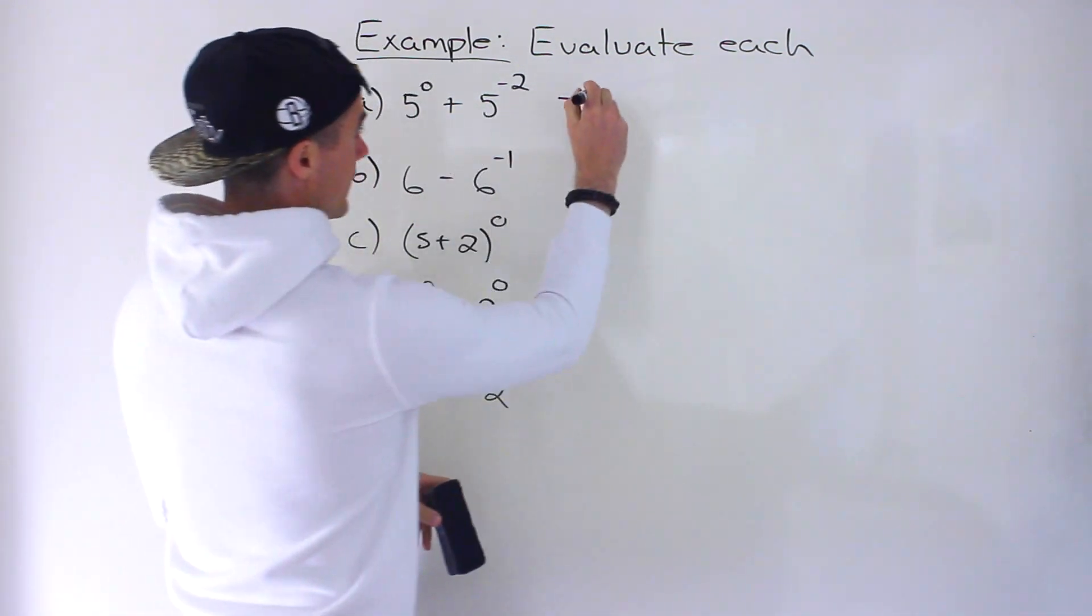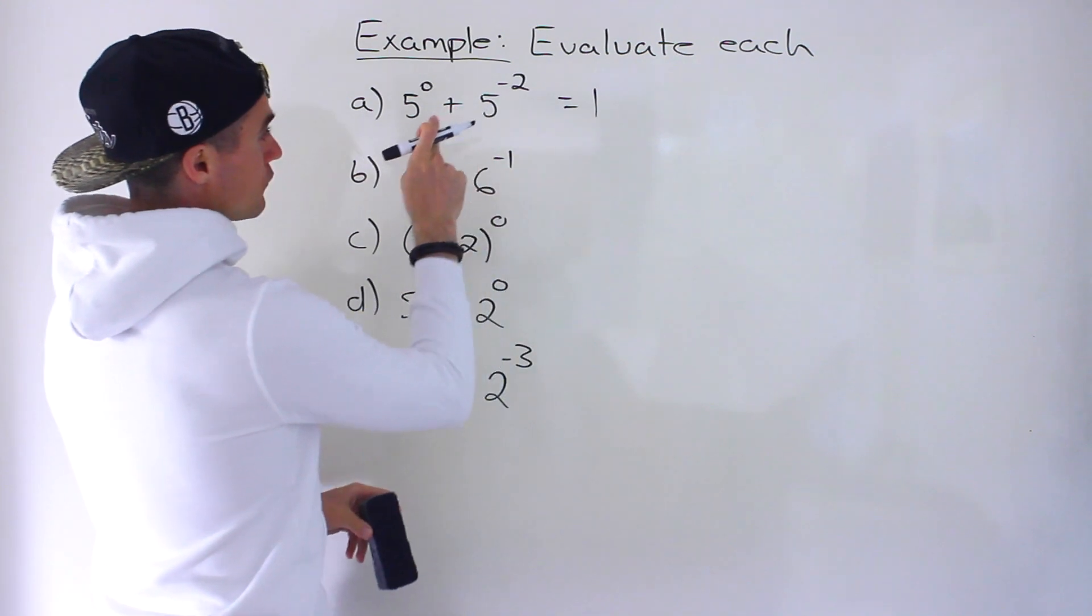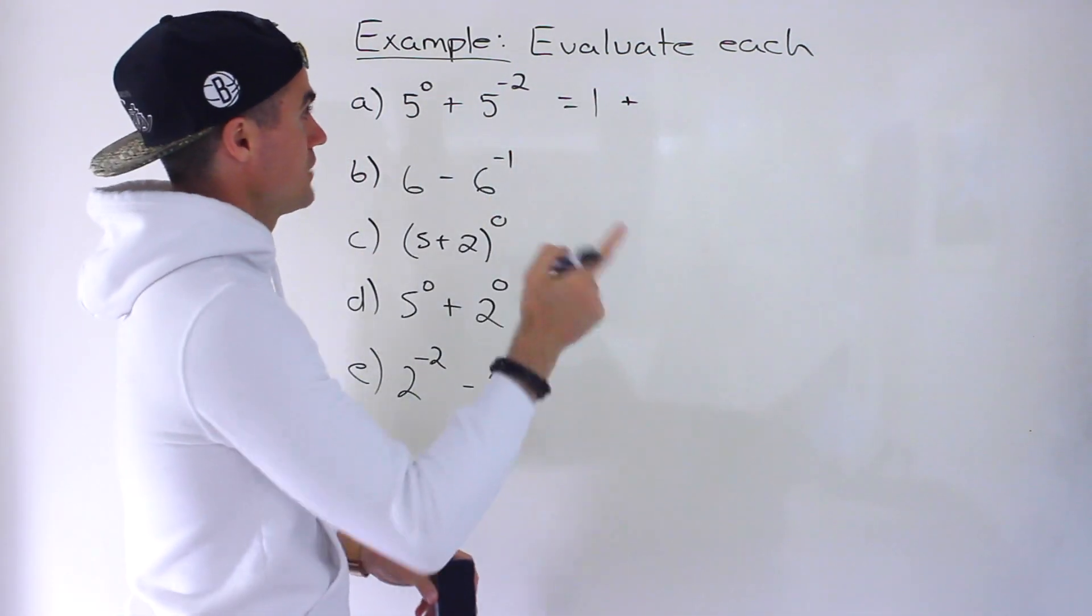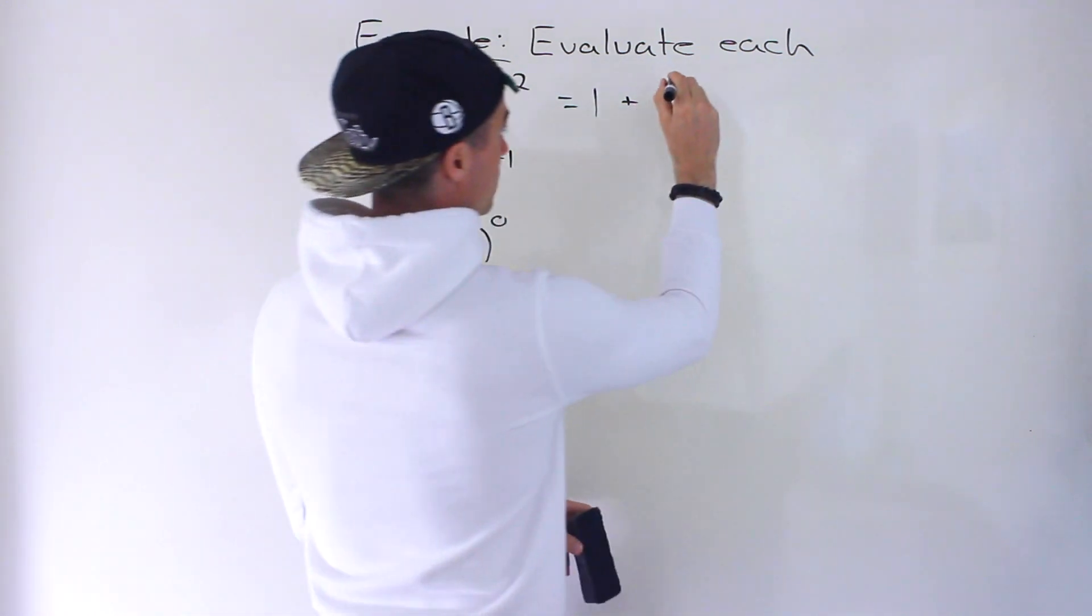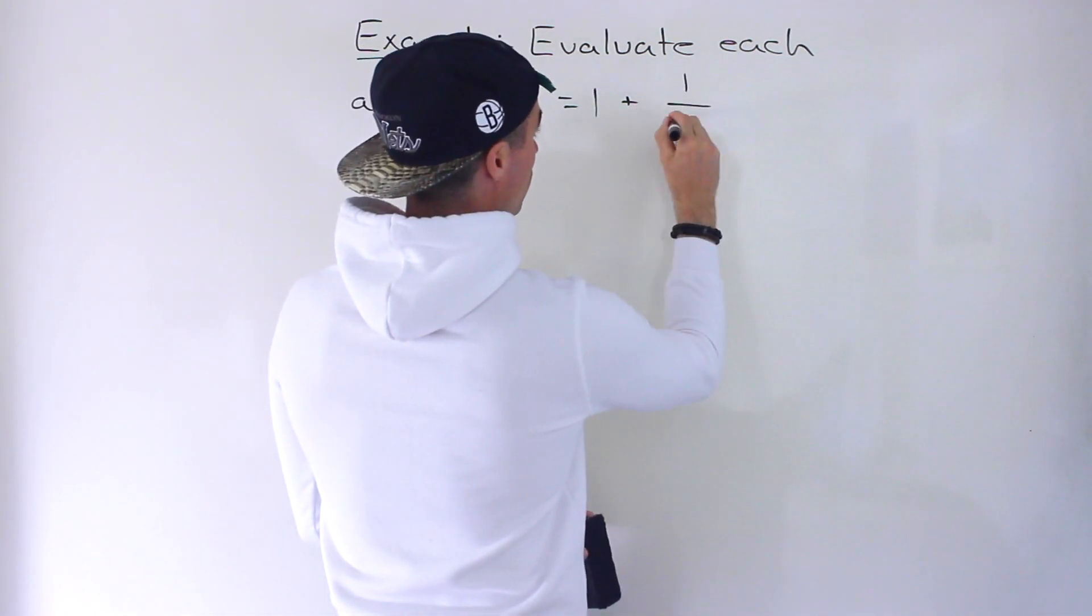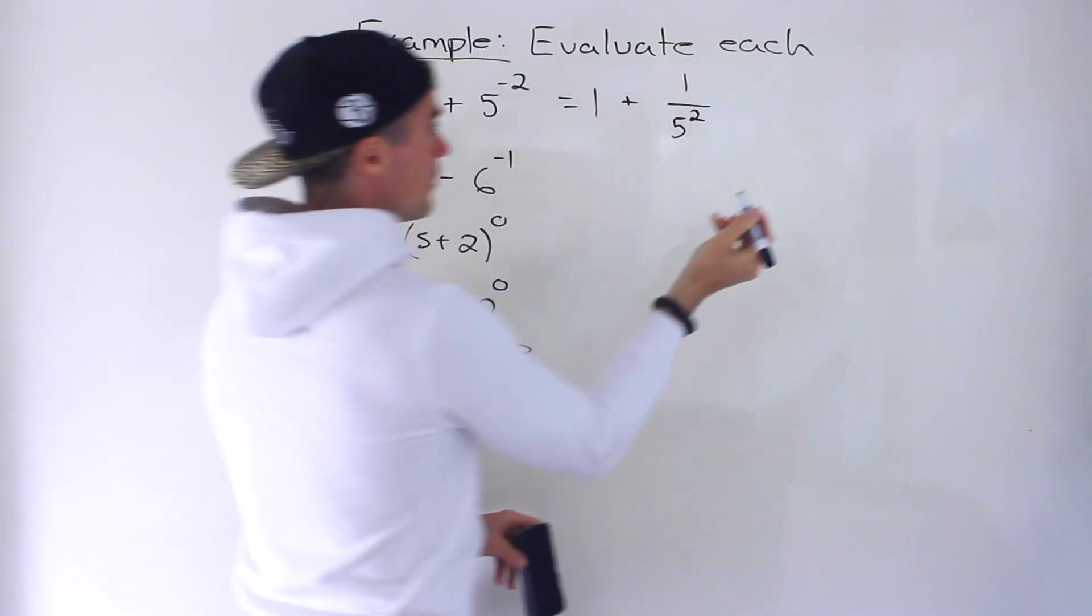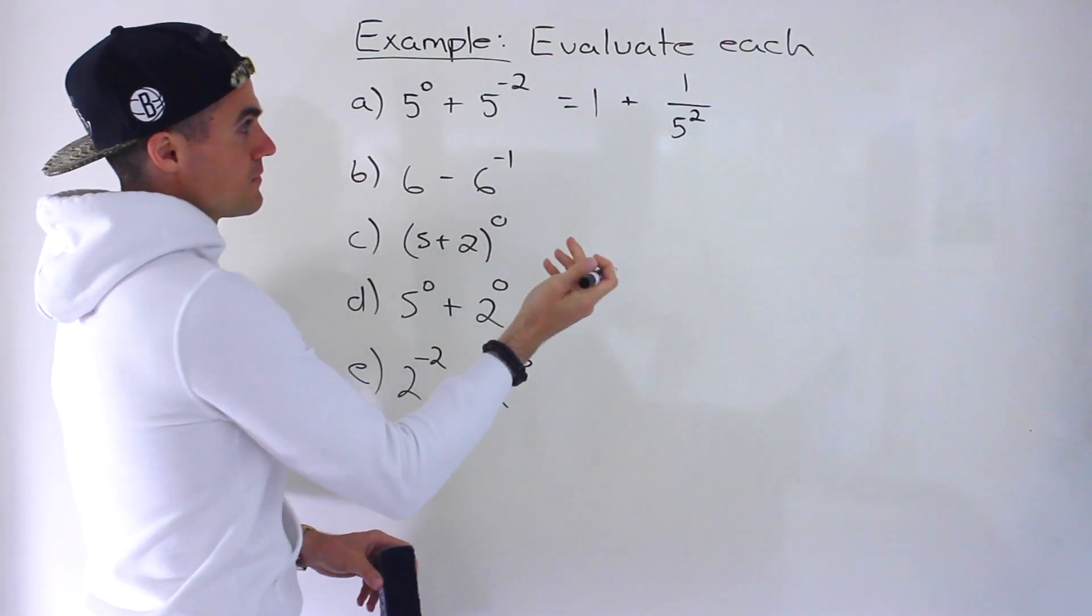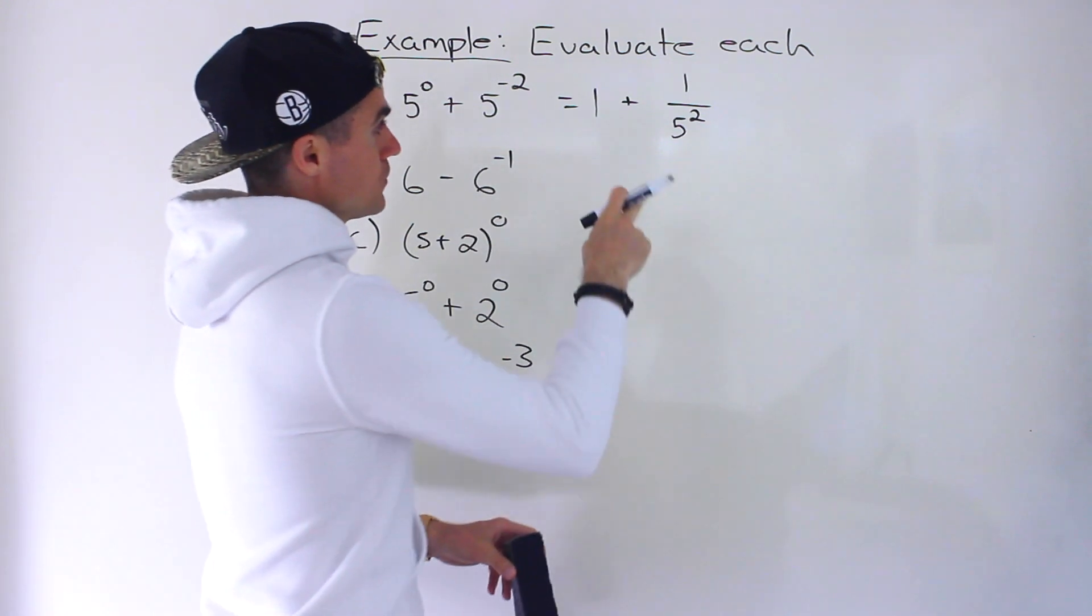So what's 5 to the power of 0? Well that's just going to be 1. And then over here we have plus 5 to the negative 2. Now 5 to the negative 2, we can rewrite that as 1 over 5 to the power of positive 2. This and this, they're the exact same thing.